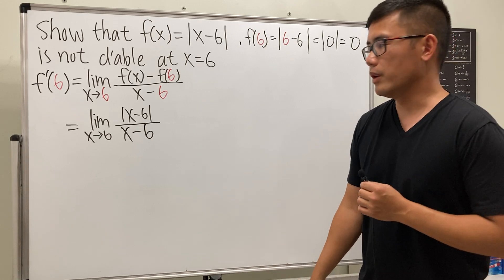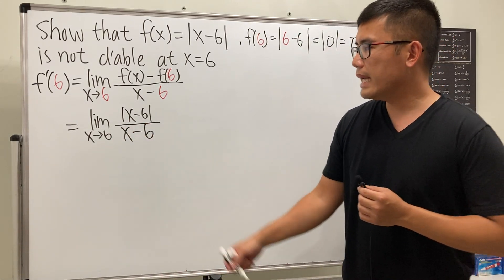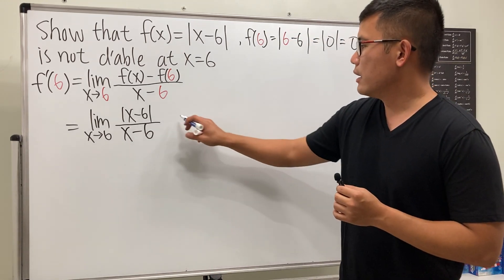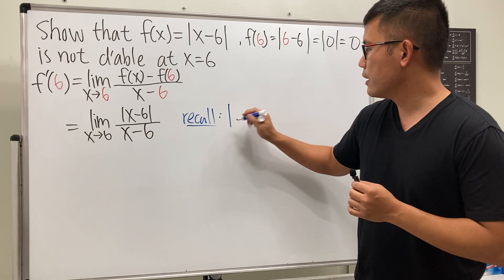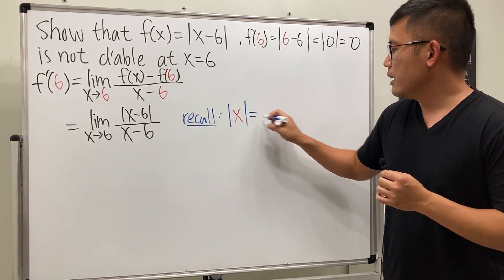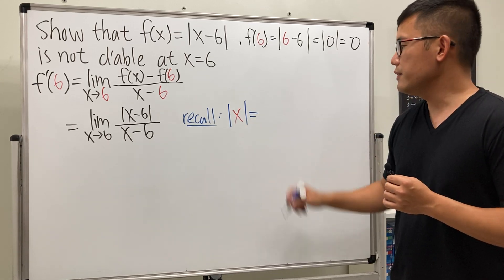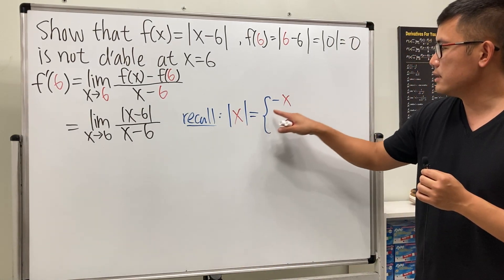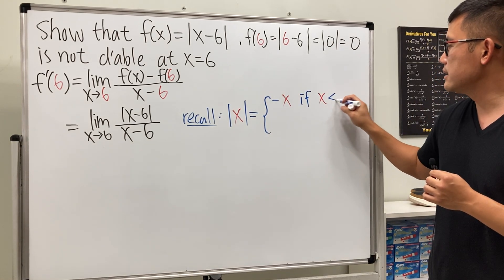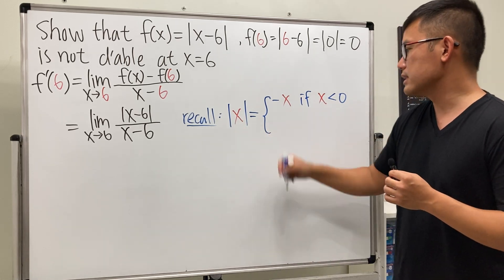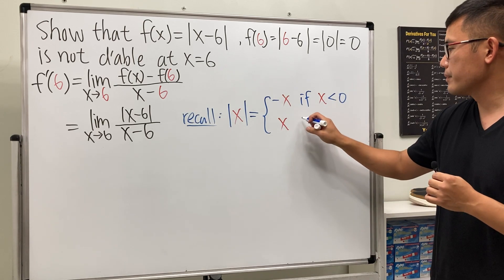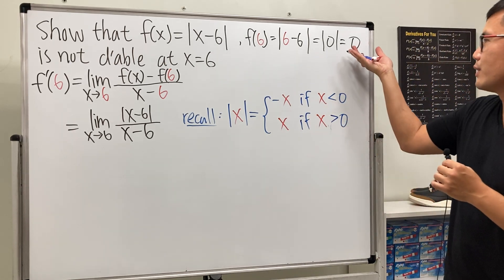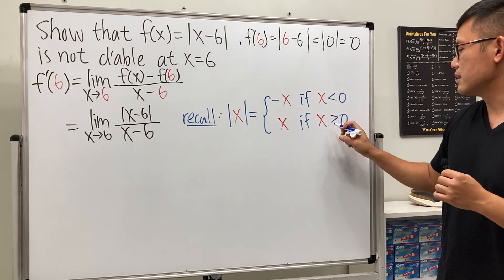If we put 6 into the expression we get 0 over 0, and since we have an absolute value it's technically a piecewise function. Recall: for an absolute value function, if the input is negative, we negate the input so negative times negative gives positive — so absolute value of x equals negative x when x is less than 0. If the inside is positive, just remove the absolute value, so it equals x when x is greater than 0.